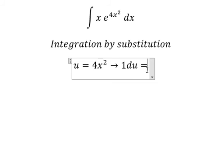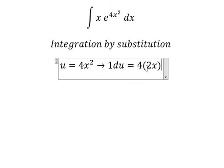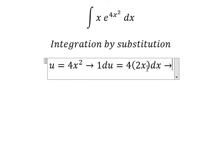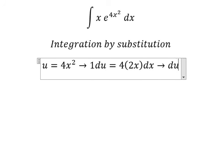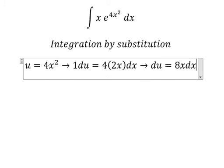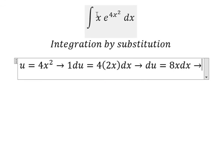We simplify because we don't have 8 in the original integral, so we need to divide both sides by 8. This gives us du/8 = x dx.